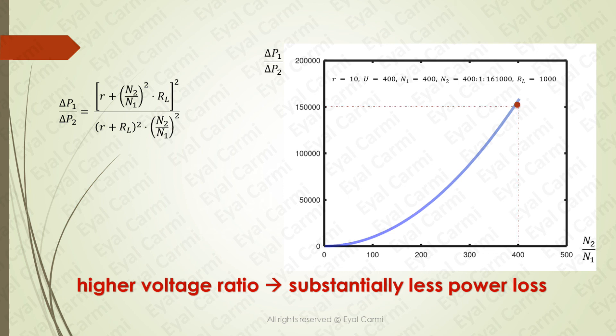For example, increasing the turn ratio by 400 which is equivalent to increasing the voltage 400 times decreases the power loss about 150,000 times.